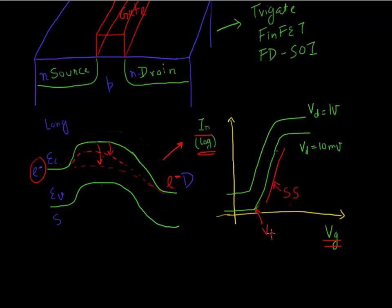Another thing to point out is the voltage at which you start seeing this exponential increase — that is known as the threshold voltage, or Vt. Note that this is a very simple definition of Vt; there are more mathematical definitions, but for simplicity, let's define Vt as the point at which we start to see this exponential increase in drain current.